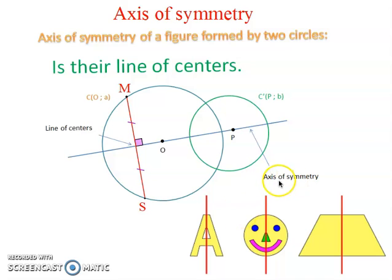The existence of an axis of symmetry is not only for any two circles. Some figures may have an axis of symmetry, like the figures before us. For example, letter A—this red axis cuts it into two congruent parts, so it is an axis of symmetry. Similarly, in this happy face, the red line is an axis of symmetry. It cuts the figure into two congruent parts, also here. I hope everything is clear and thank you very much.